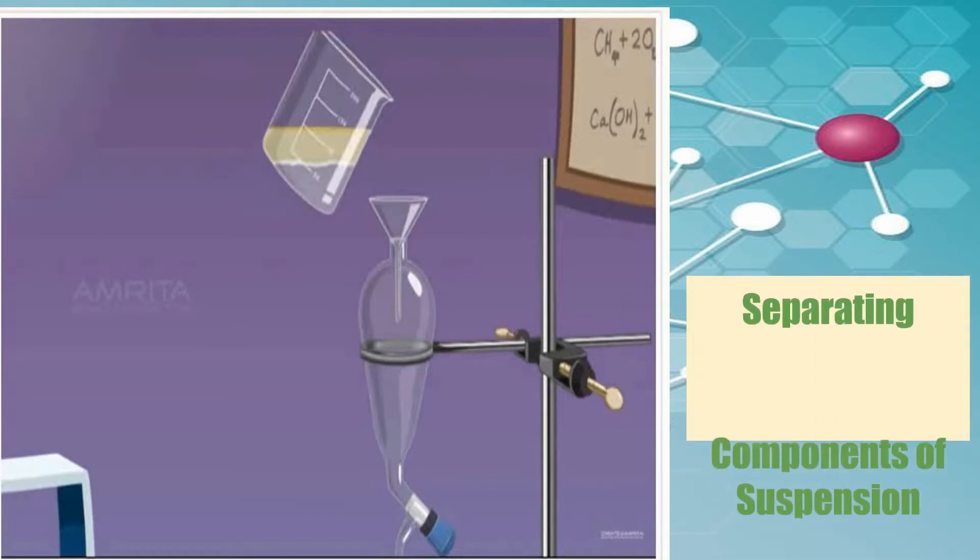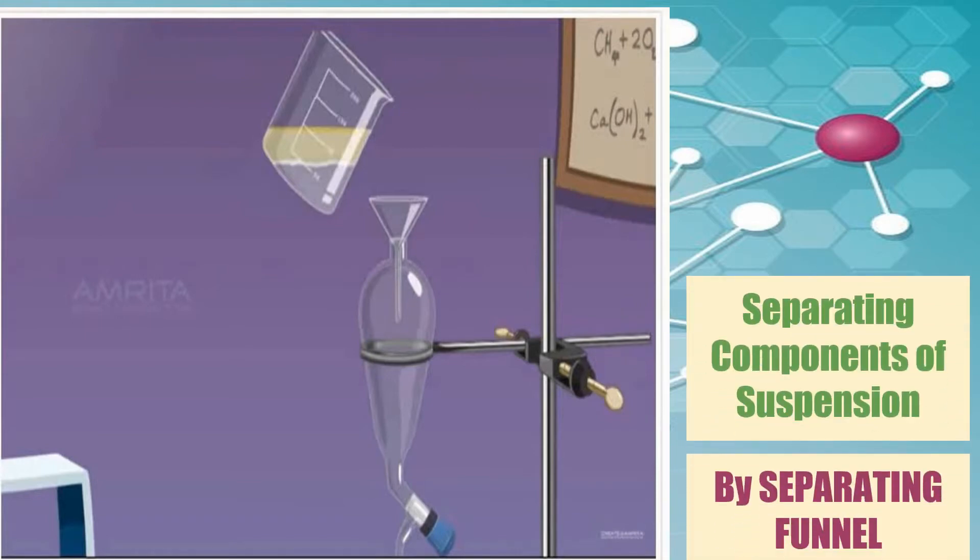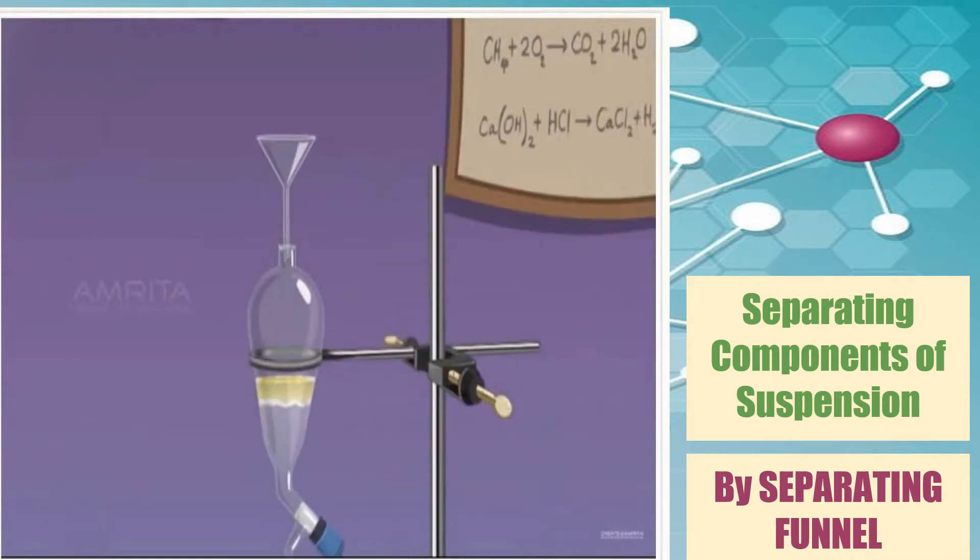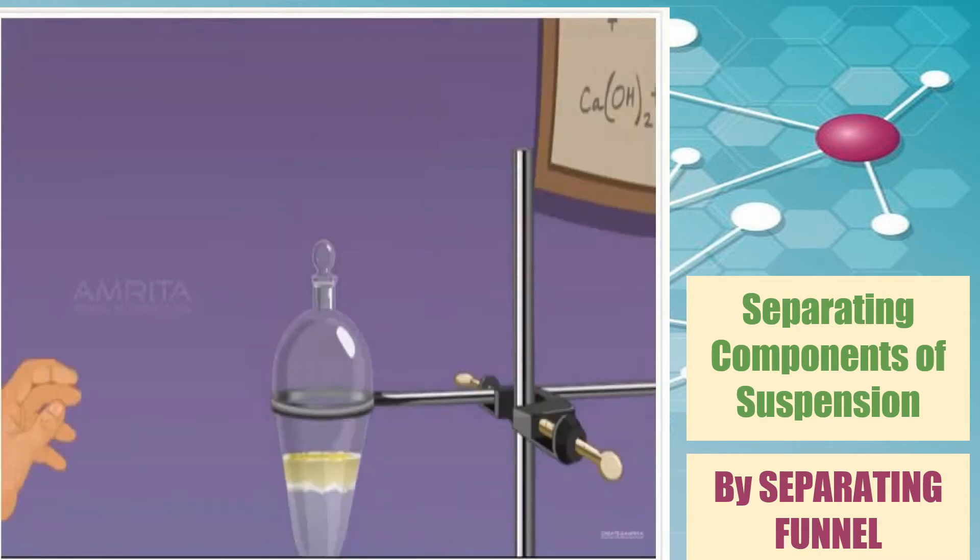Another way of separating mixture is by the use of a separating funnel. A separating funnel is used to separate two immiscible liquids. They are immiscible because they have different densities. Oil and water have different densities because oil is lighter and water is denser or heavier.